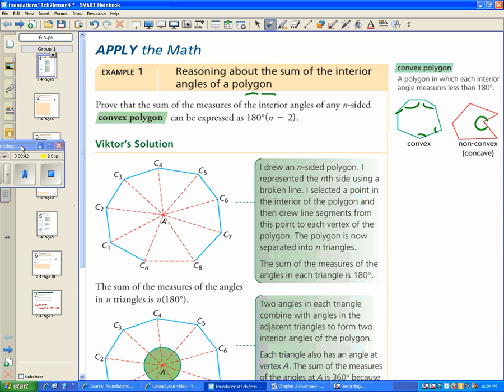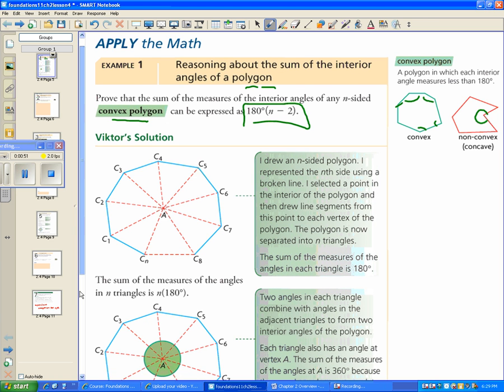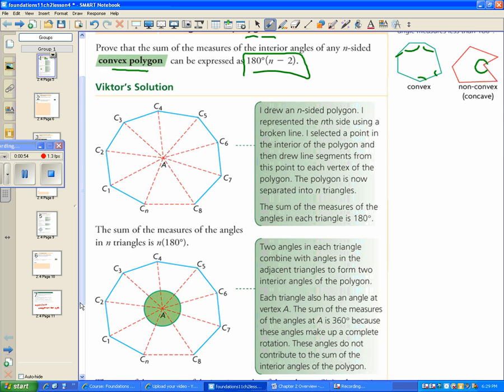It says prove that the sum of the measures of the interior angles of any convex polygon is 180(n-2). We're going to look at what Victor did here. Victor took a polygon, and remember to prove something, it has to be in the general sense. So he said, here is a general n-sided polygon.